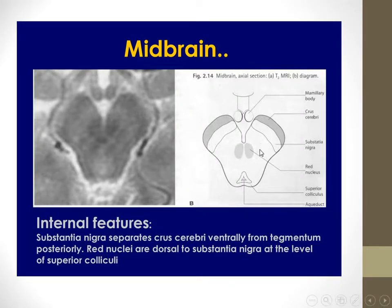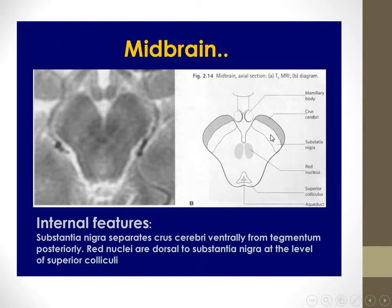Let's start with the anatomy of the midbrain — it's somewhat difficult. The midbrain is composed of three parts: the most anterior is the crus cerebri, then the tegmentum, which contains the red nucleus, separated from the crus by the substantia nigra. The most posterior part is the tectum, which contains the superior and inferior colliculi, posterior to the aqueduct.